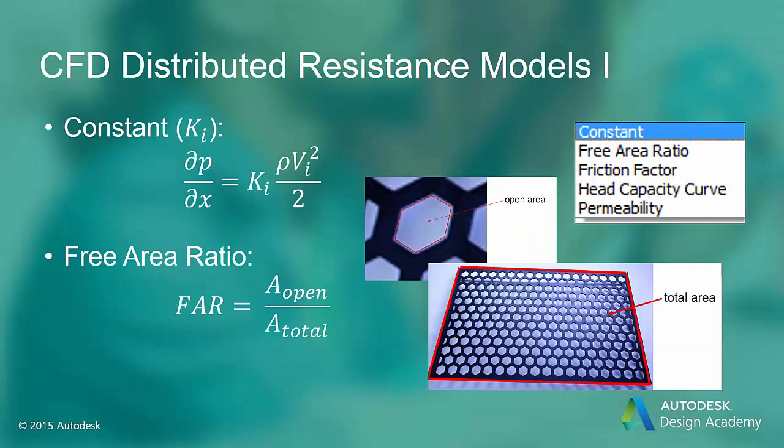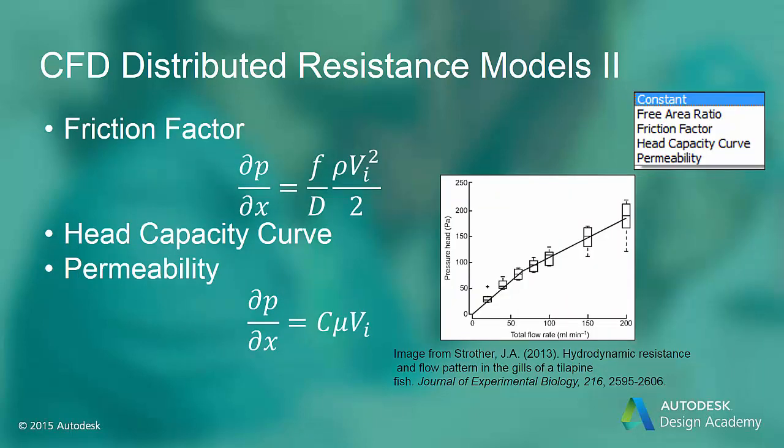There are several ways to represent the distributed resistance. In the constant method, you would provide the K value directly — this value may be provided by a manufacturer. In the free area ratio method, you specify the ratio of the total open area to the total area of the screen or perforated plate, a number between 0 and 1, which is used to calculate the K value. In the friction factor method, you provide data to calculate the friction factor based on the Moody chart, which works well for a tube bank such as in the OTSG. In the head capacity curve method, you provide a table of pressure drop versus flow rate to calculate a K value. The permeability model is a Darcy relation, typically used for soil or cloth, where the permeability coefficient C is specified.